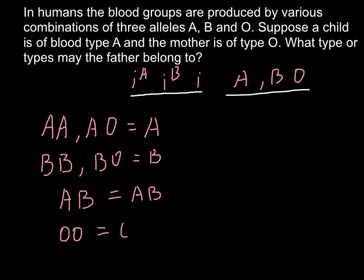From this problem we know that mother belongs to blood group O. And the only genotype possible for this blood group is when two alleles are OO.